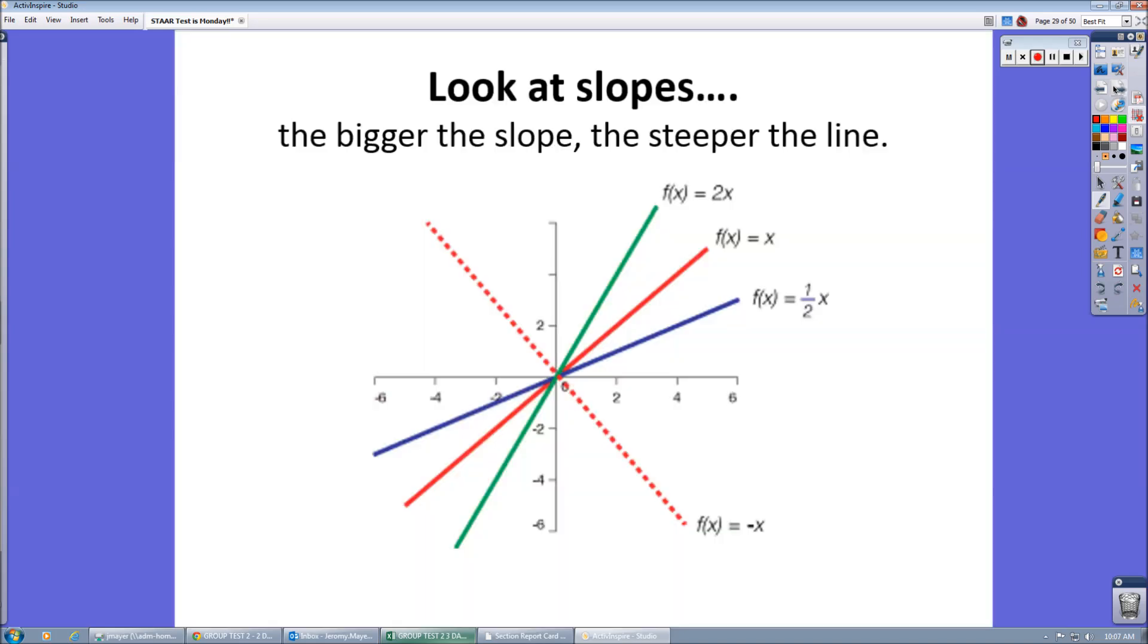As the slopes get larger, the lines become steeper. And steeper means it's just getting a little bit harder to climb up that particular line or up the side of the mountain, so to speak.